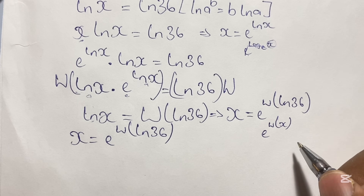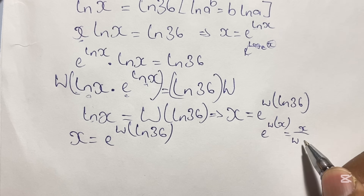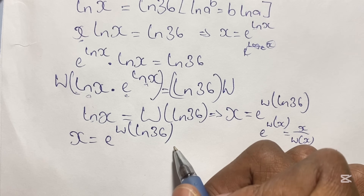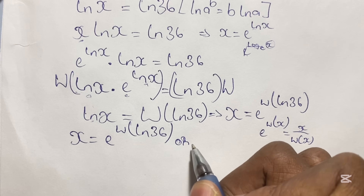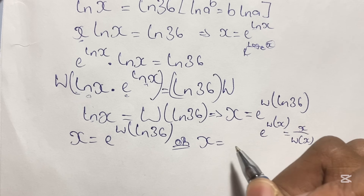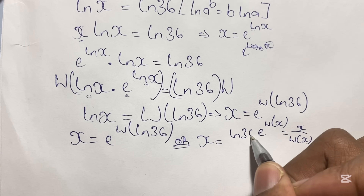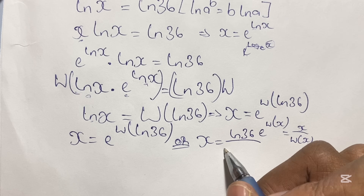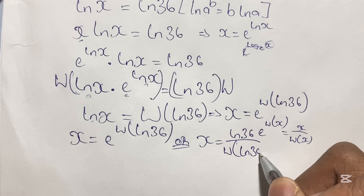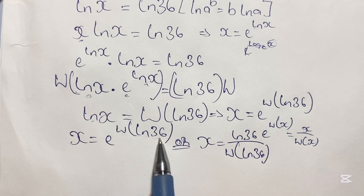I just want to show you another way to write this expression. So e to the power of W(x) can be rewritten as x over W(x). This means x equals e to the power of W(ln 36), or equivalently x equals ln 36 over W(ln 36).